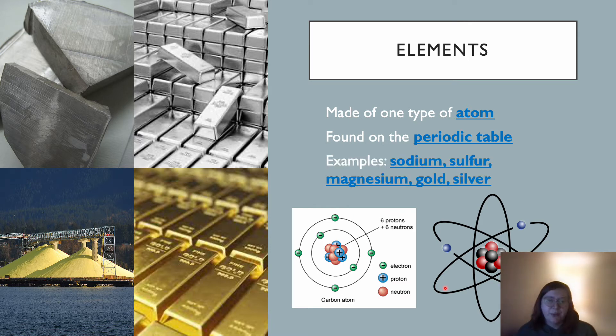So some examples are sodium, which is this very soft metal up in the left corner. That's sodium. Down here is sulfur. So this is a picture from Stanley Park looking into North Van. And you might see these big piles. That is all sulfur. Magnesium is an example, or gold and silver, which are pictured here. These are all elements, and you'll find them all on the periodic table.